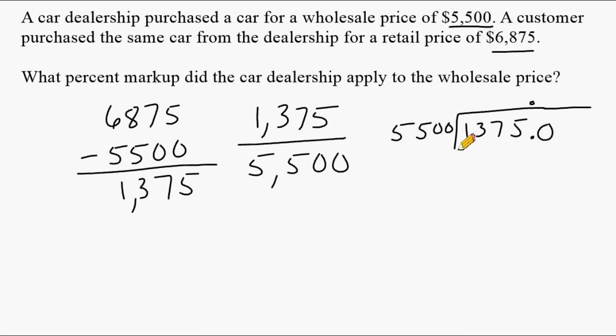So what we're going to do is divide $5,500 into $13,750. So we know that $5,000 times 2 is $10,000 and times 3 is $15,000 and that would be too big. So this only fits into here 2 times and doubling $5,500 is $11,000. So we subtract $11,000 from $13,750, which gives us $2,750.